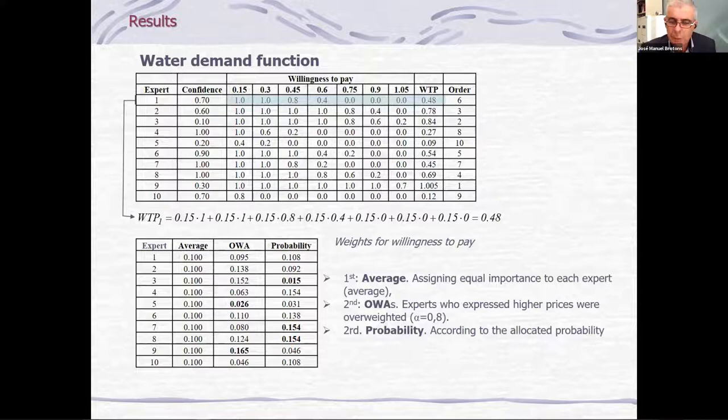I'm going to present the results. We have asked 10 experts. This is the confidence degree of each expert. These are the willingness to pay. We have expressed this in pesos. A peso is more or less, 25 pesos is more or less one dollar. The willingness to pay of the expert one is 0.5. This is the membership functions. 0.15 multiplied by one. The difference between these two multiplied by one. The difference between these two, 0.15 multiplied by 0.8. And so on. So we will have 10 willingness to pay. And this is the order from the highest to the lowest.